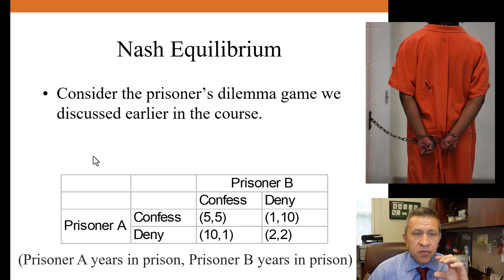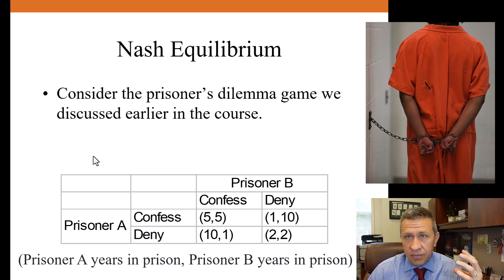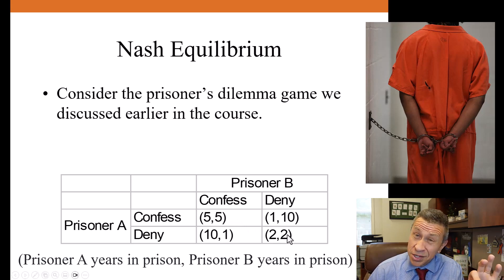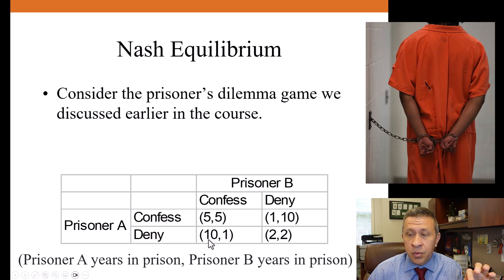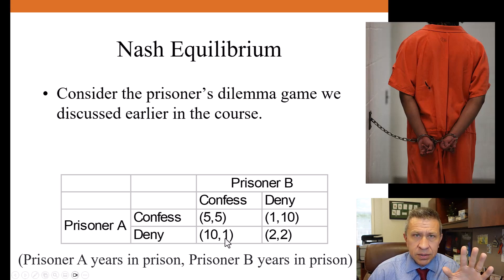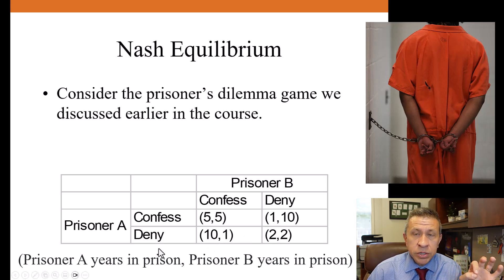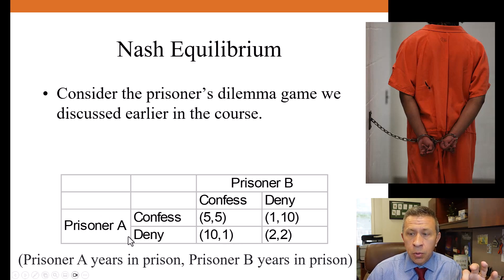The years in prison for prisoner A, always listed as the first payoff, and prisoner B, listed as the second payoff, are shown in the payoff matrix. If they both confess, they each get five years. If they both deny, they each only get two years. But if one confesses and one denies, the one who denies goes to prison for 10 years while the one who confesses gets out after a year. Remember, prisoner A's payoff is first, prisoner B's payoff is second, and the row player is listed with the first payoff, then the column player.